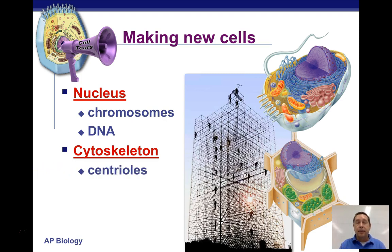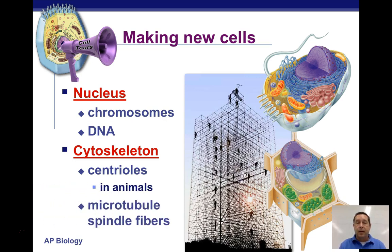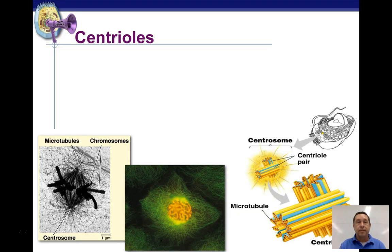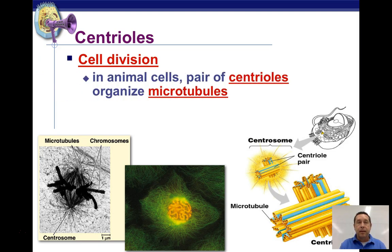In animal cells, there are structures called centrioles that are located right outside the nucleus, and they play a role in forming the cytoskeleton. The cytoskeleton is made up of microtubules that form the spindle fibers, which attach to and move the chromosomes during the various stages of cell division. Centrioles are only in animal cells — they're a type of organelle made up of microtubules, and they form the ends of the spindle apparatus for animal cells.